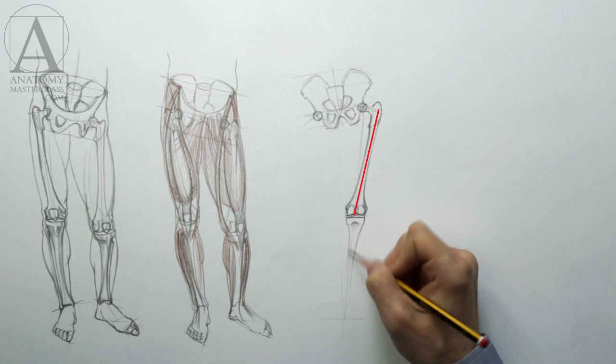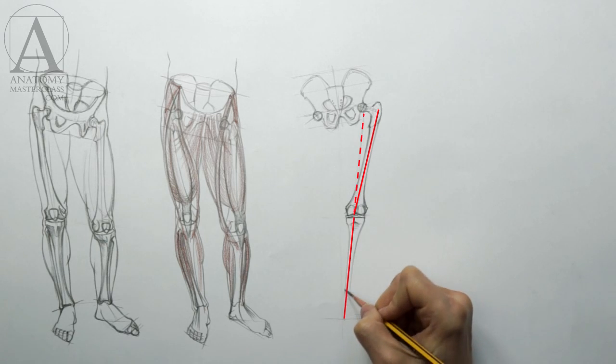Here, you can see that the tilt of the thigh bone is not the same as the tilt of the shin bone.